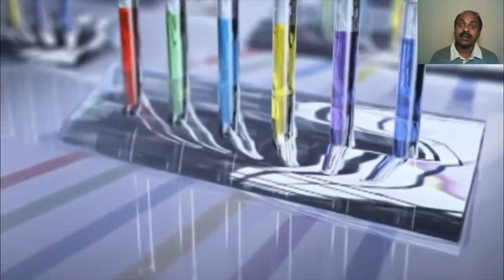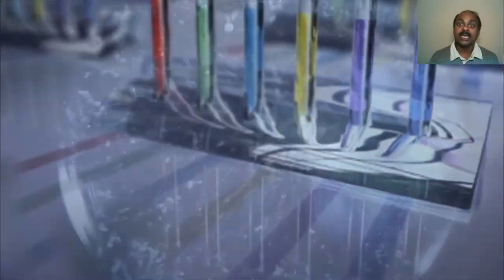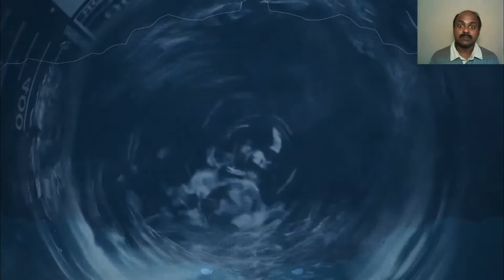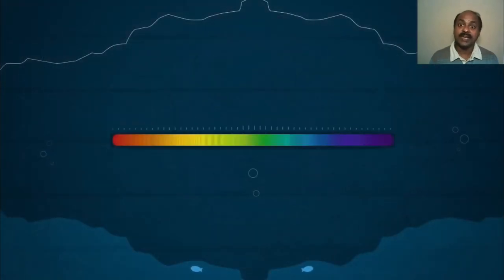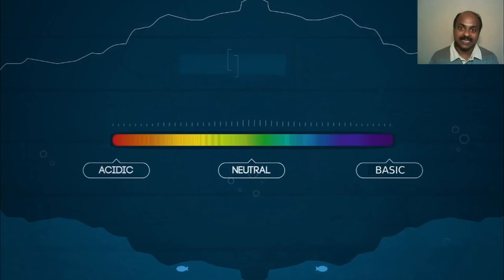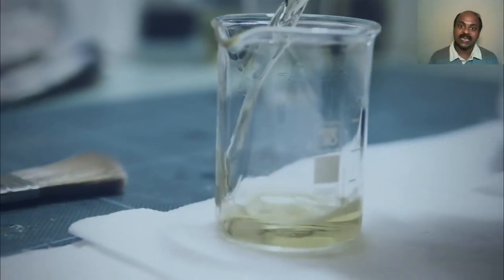Welcome to this interesting course called the colorful world of chemical indicators. In this course, we will learn about the nature of acids and bases. We will also learn about the different indicators that we can use to check whether a substance is acidic or basic, and what is the color change in these indicators.